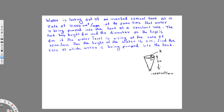The water level in the tank has height H and radius r. They say the water level is rising at a rate of 20 centimeters per minute, so dh/dt = 20 cm/min. The height of the water is 2 meters, so H = 2 meters. We need to find K, the rate at which water is being pumped in.